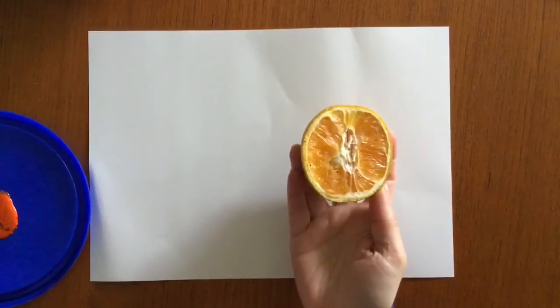Today I'm going to show you some printmaking that you can do from things in your kitchen. The first type of print I'm going to do is just a simple print and I'm going to use a cut orange.